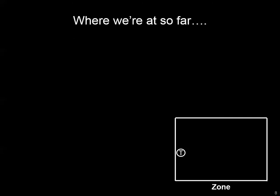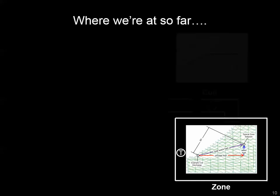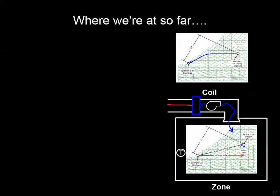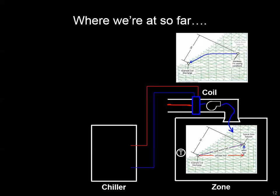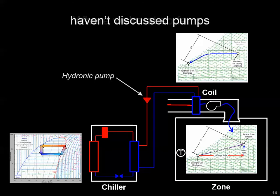Quick recap: we started looking at the HVAC loads in a zone, talked about the different components of those loads, and modeled them on the psychrometric chart. Same thing with the HVAC process designed to address those loads. We continued by looking at the HVAC equipment designed to provide that load management — something like a chiller — and looked at the refrigerant cycle components and the saturation diagram, like a pH diagram, understanding how pressure and enthalpy change and how we can quantify the energy associated with each phase.